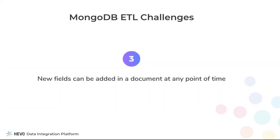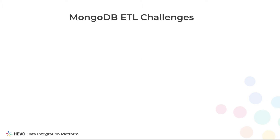It is possible to add columns to a document in MongoDB by running a simple update to the document. In Redshift, however, the process is not straightforward. You have to construct and run alter statements each time a new field is detected.